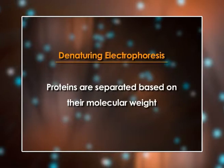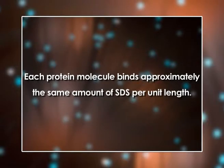In denaturing electrophoresis, proteins are separated primarily based on molecular weight. Proteins are denatured prior to analysis by mixing them with mercaptoethanol, which breaks down disulfide bonds, and sodium dodecyl sulfate (SDS), an anionic surfactant that hydrophobically binds to protein molecules and causes them to unfold due to repulsion between negatively charged surfactant head groups. Each protein molecule binds approximately the same amount of SDS per unit length; hence the charge per unit length and molecular conformation is approximately similar for all proteins.